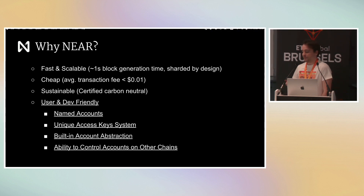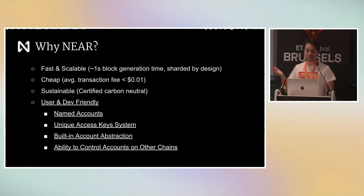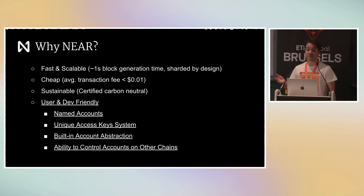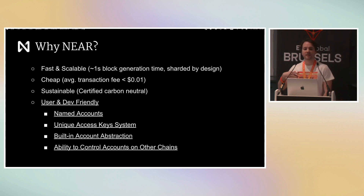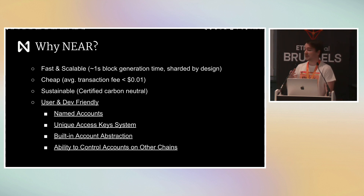So maybe we can start with why even use NEAR. We're an L1 that is very fast and scalable — we have one-second block generation time and we're sharded by design. Our transactions are on average very cheap, less than a cent, and we are a certified carbon-neutral chain. But beyond that, I think something interesting about NEAR is that it's very user and dev friendly, because it comes with named accounts, a very unique account access key system, built-in account abstraction, and the ability to control, to some extent, accounts on other chains.